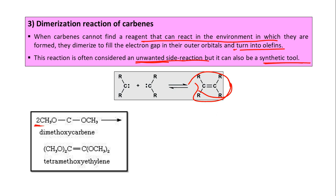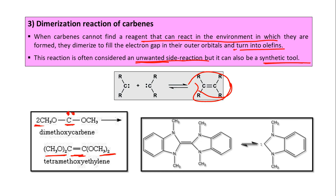Here is the example: we have taken two dimethoxy carbene molecules. This is the carbene carbon with OMe groups on both sides. These two molecules dimerize with each other, and ultimately we get a C=C double bond with two OMe groups on each side — that is tetramethoxy ethylene, which is the tetramethoxy derivative of ethylene (CH2=CH2). Next example: two carbene molecules shown with an equilibrium sign dimerize, and we get this C=C double bond. That is all about insertion reaction and dimerization reaction.